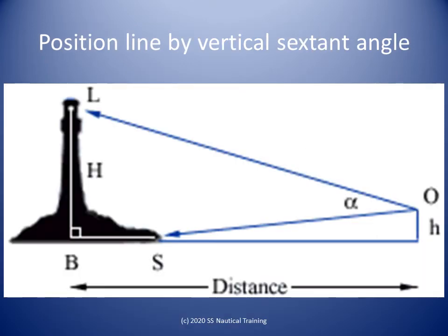The sextant can also be used to measure the vertical angle between the top and the base of charted landmarks, and a position line showing the observer's distance off can be calculated.